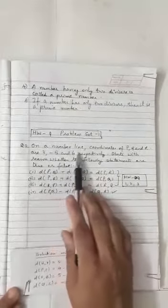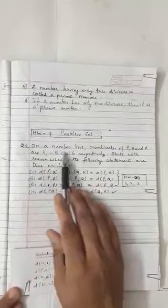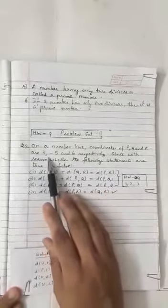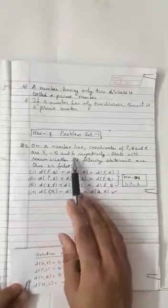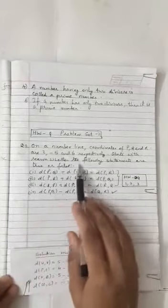Here what is given is on a number line, problem set 1, question 2. On a number line, coordinates of point P, Q, R are 3, minus 5, and 6 respectively. State with reason whether the following statements are true or false.